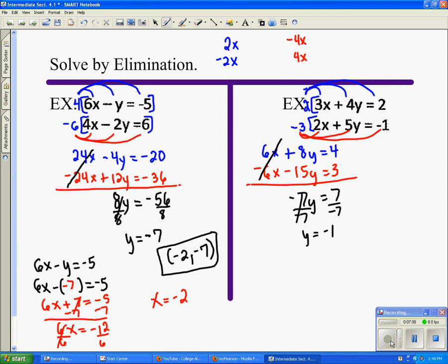Now I go back into either one of my original. So I'm going to take the first one, 3x plus 4. But instead of y, I'm going to substitute the value in for y, which is negative 1, and then I'm going to solve. So 3x minus 4 equals 2, and I solve this out. And 3x equals 6, so x equals 2.